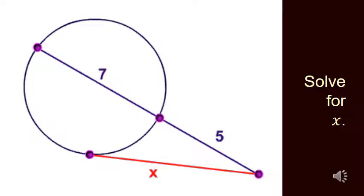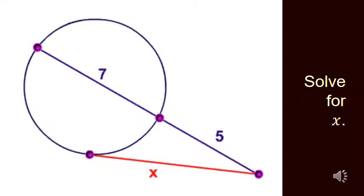So let's see if you guys can figure out what would happen with 7, 5, and x. And again, it's nothing particularly nice for the answer, but we are going to have x squared equals 5 times 12. So x squared equals 60. If you do the square root, you end up with about 7.75.